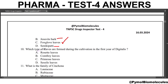Next question: which types of leaves are formed during cultivation in the first year of digitalis? Digitalis plucking is done over two years. In the first year, rosette leaves are cultivated. In the second year, stem leaves are collected.